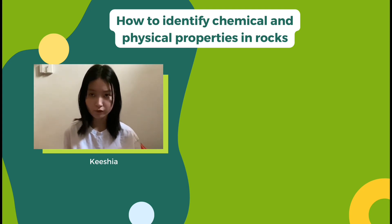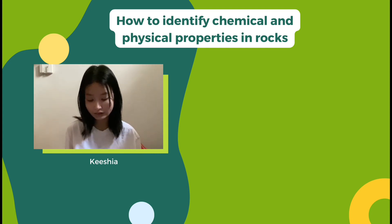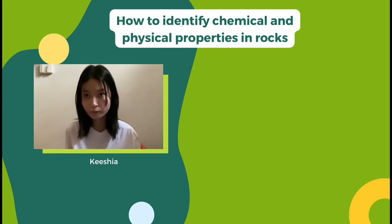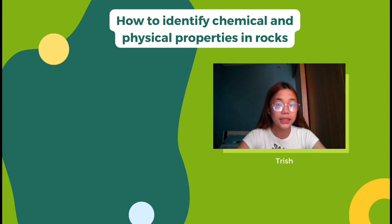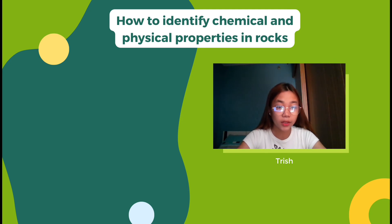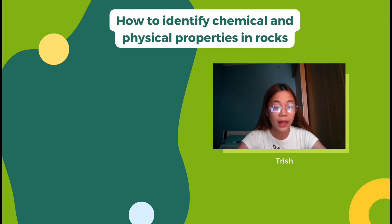I've heard from somewhere that rocks can be identified using their chemical and physical properties. Is that correct? That's right. Rocks can be differentiated by their chemical and physical properties by identifying the color, hardness, luster, crystal formations, density, and cleavage. These are characteristics that aid geologists in determining a mineral's identity in a rock. The atomic structure of a crystal essentially determines its form, cleavage, and hardness. Chemical composition is the main determinant of color and density.